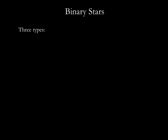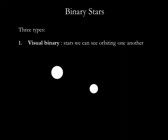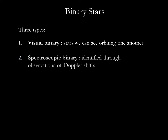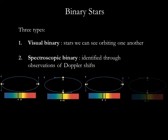Binary star systems fall into three general categories. A visual binary is a pair of stars that we can see with the telescope. In this case, we can measure the period directly just by timing how long it takes the stars to orbit one another. Another type is a spectroscopic binary. In a spectroscopic binary, the only way we're able to determine that two stars are orbiting one another is by looking at their spectral lines. Timing the movement of the lines allows us to determine the orbital period.